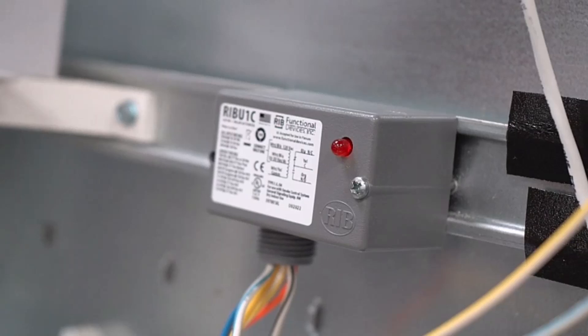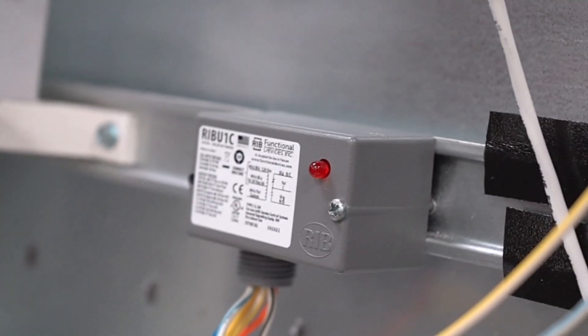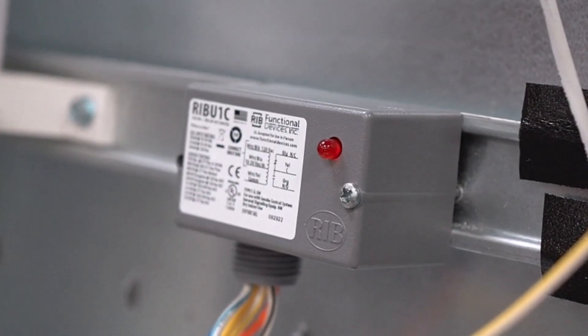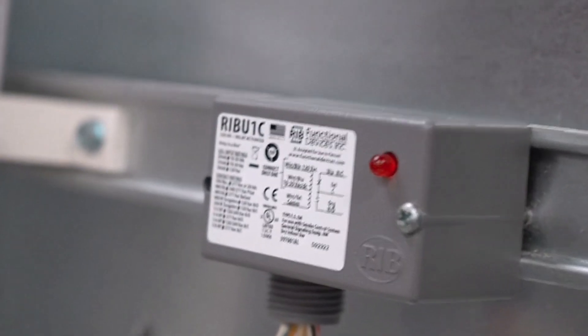Hello, today we're going to learn how to wire up a RIB relay to the UC600. This end device is common for start-stopping or turning on and off devices.